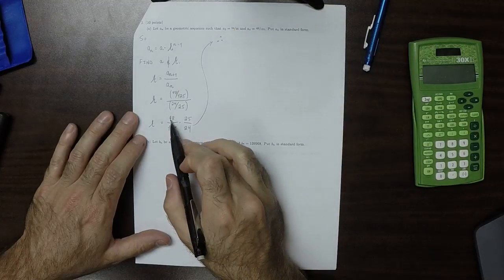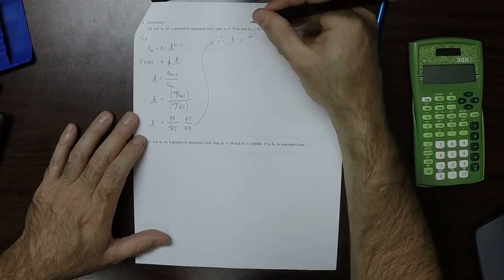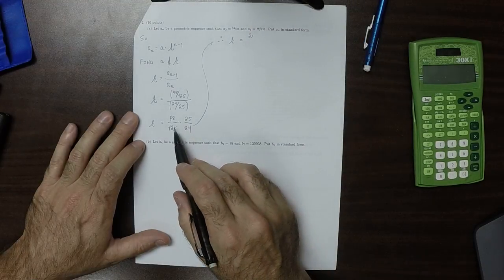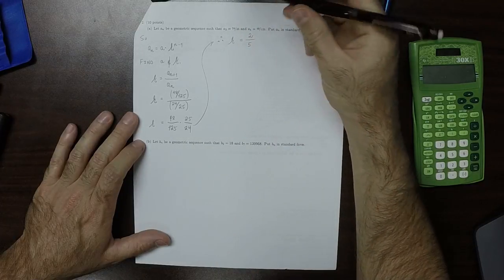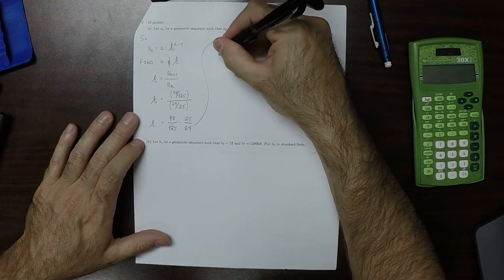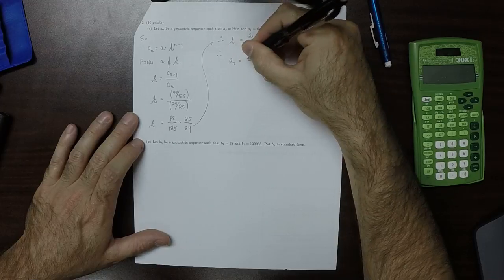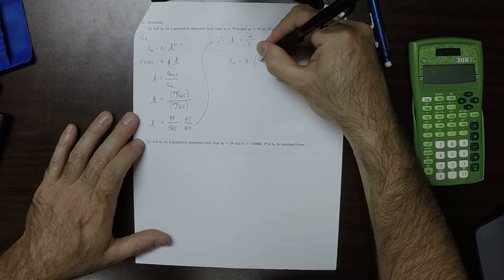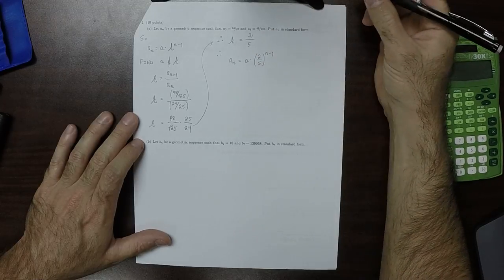Cancellation occurs. 48 over 24 leaves a 2 in the numerator, and 25 over 125 leaves a 5 in the denominator. Therefore, the ratio is 2/5. Therefore, we know that aₙ is a multiplied by 2/5 to the power n minus 1.